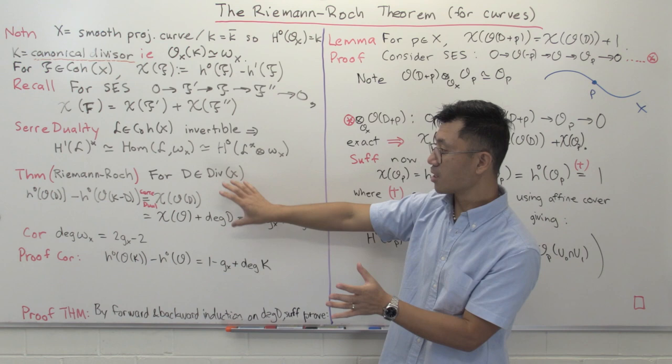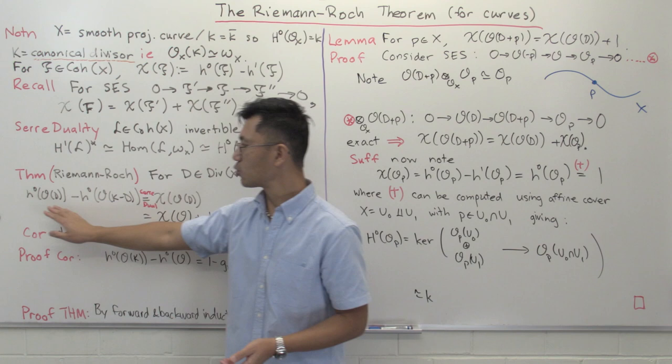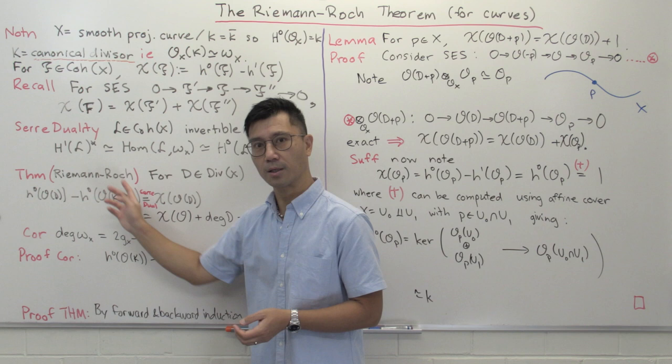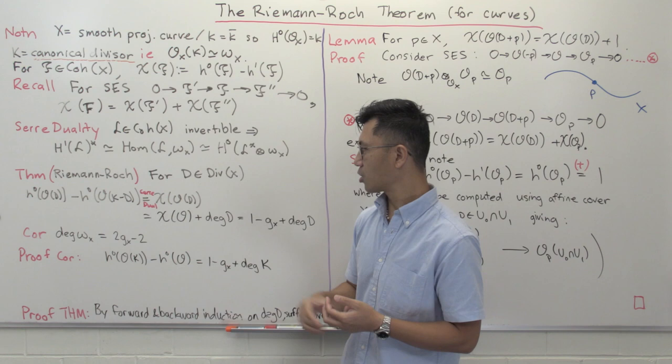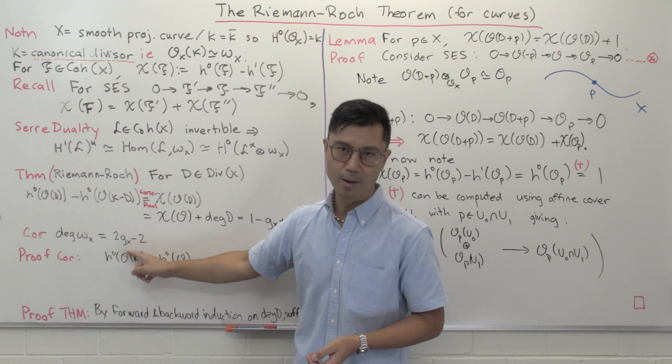Some comments about what's involved here. The theorem doesn't just compute h0(O(D)) for you automatically — it's only a relationship between h0(O(D)) and h0(O(K−D)). Nevertheless, this is still very useful: often there'll be a reason why you can compute one of them, and since you can compute one, you can compute the other. As an example, we're going to compute the degree of the canonical sheaf Omega_X, which equals 2 times the geometric genus minus 2.